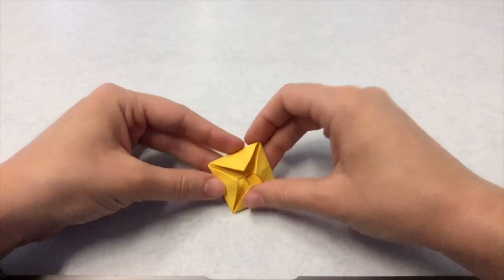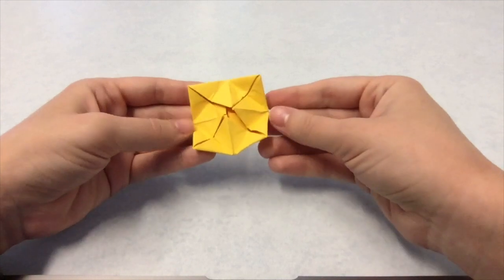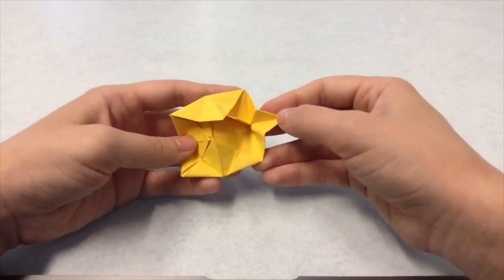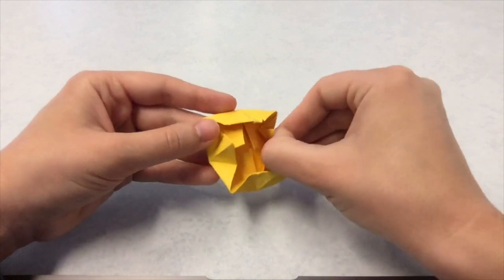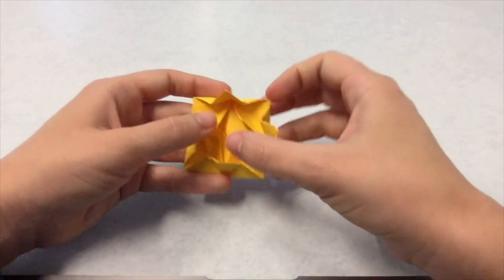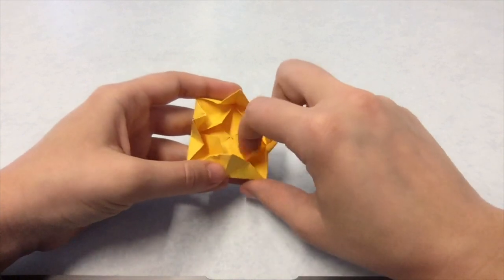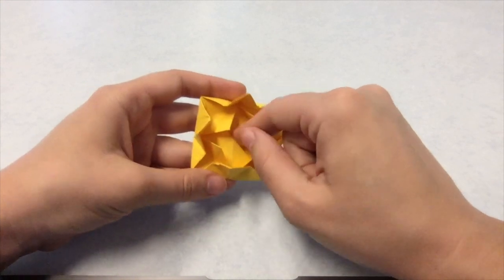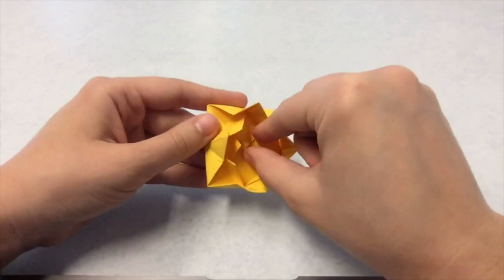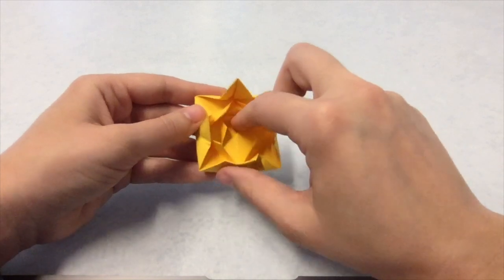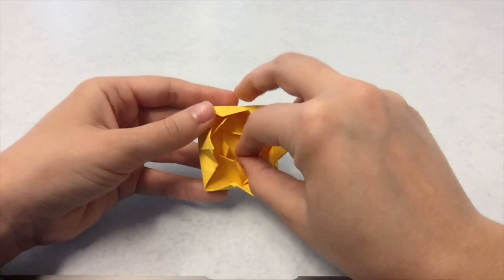We're ready for the last step. First, open up the outer layer of petals. Then pull back the next layer, not all the way, just enough so that they stand out. Use your finger to push back the next layer of petals. You just want to open them up a little bit so that you can see the petals underneath. For the innermost layer of petals, carefully curve the tip of the point up just slightly. Now the origami flower is finished.